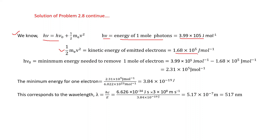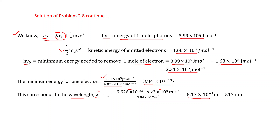The kinetic energy given is 1.68 × 10⁵ J/mol. The minimum energy to remove one mole of electrons = hν − ½mv² = 3.99 × 10⁵ − 1.68 × 10⁵ J/mol. Dividing by Avogadro's number gives the minimum energy per electron as 3.84 × 10⁻¹⁹ J. Using E = hc/λ to find the corresponding maximum wavelength gives λ = 5.17 × 10⁻⁷ m = 517 nm.